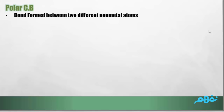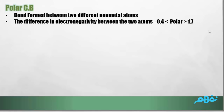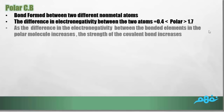Polar covalent bonds also form between two different non-metals. The difference between non-polar and polar is the electronegativity difference: for polar bonds, it is more than 0.4 and less than 1.7. As the difference in electronegativity between the bonded elements in the polar molecule increases, the strength of the covalent bond increases.